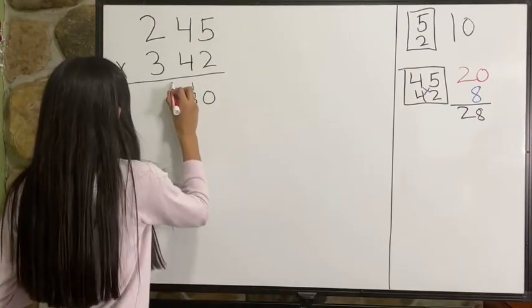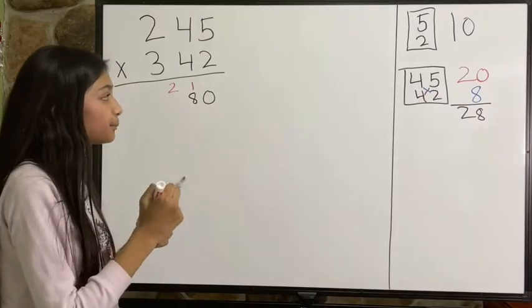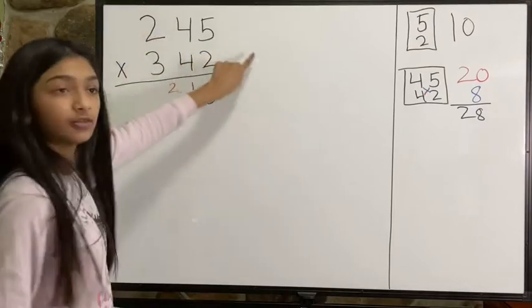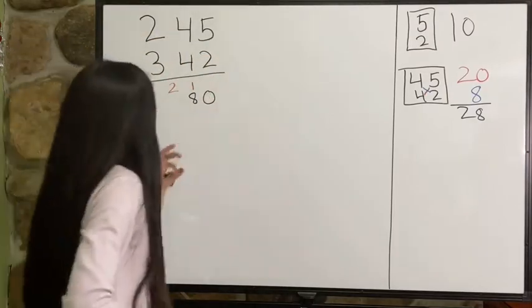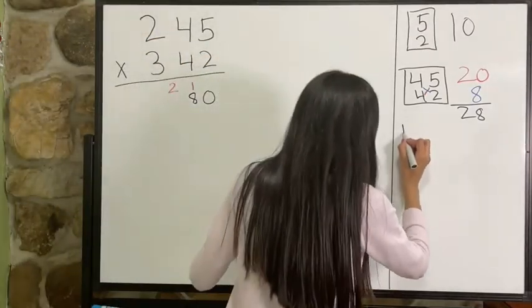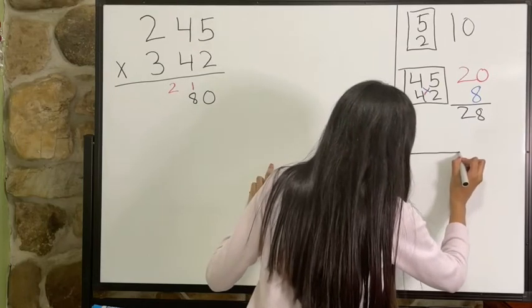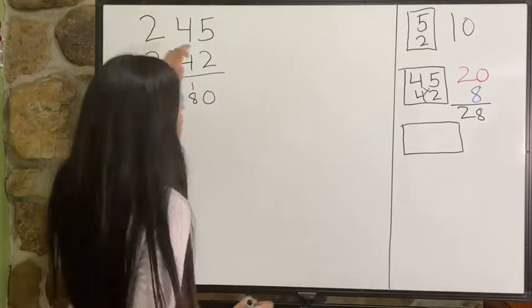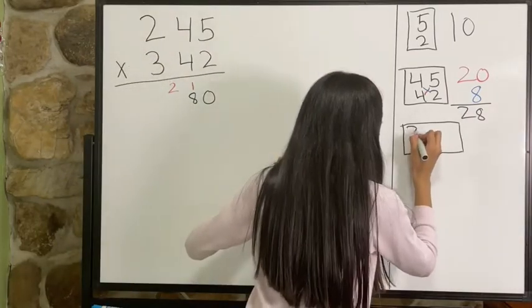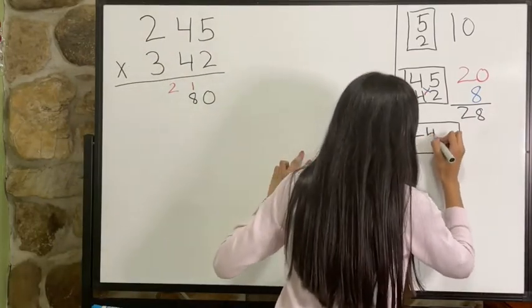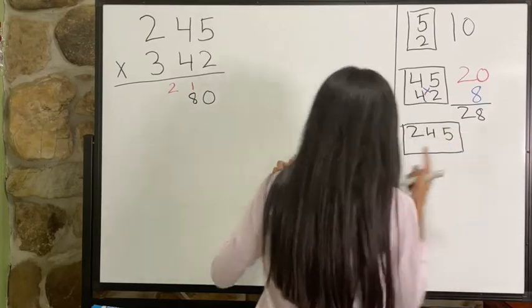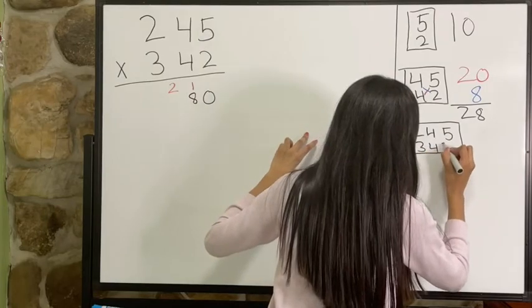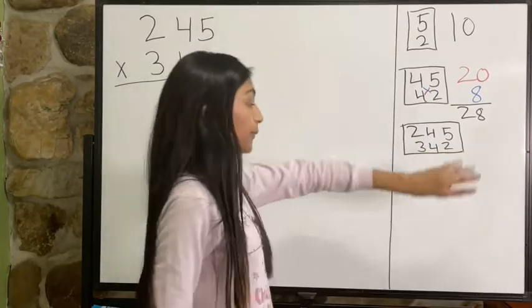Next I'm going to multiply all three digits together. Right here. 245 multiply by 342. So I'm going to have to cross multiply all of these numbers.